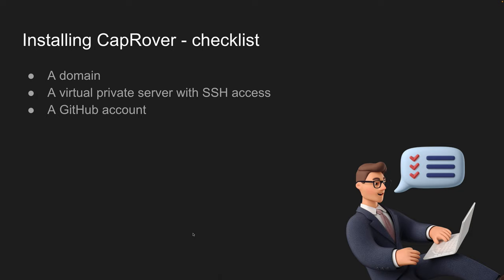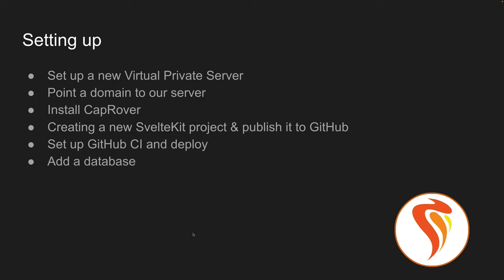Let's do a quick checklist of what we need to install CapRover. You need a domain — it doesn't have to be a full domain; you can use a subdomain. You need a virtual private server with SSH access, and a GitHub account. The steps we'll follow: create a brand new VPS (I'll use DigitalOcean), point a domain to our server, install CapRover, create a new SvelteKit project, publish it to GitHub, set up GitHub Actions for CI/CD, deploy it, and then demonstrate how to easily add a database.